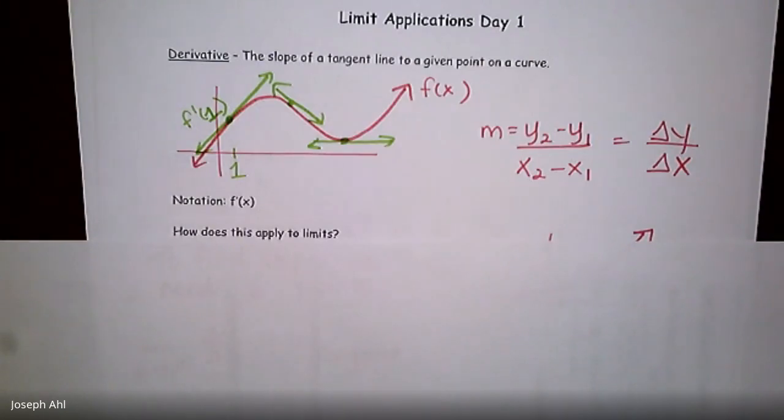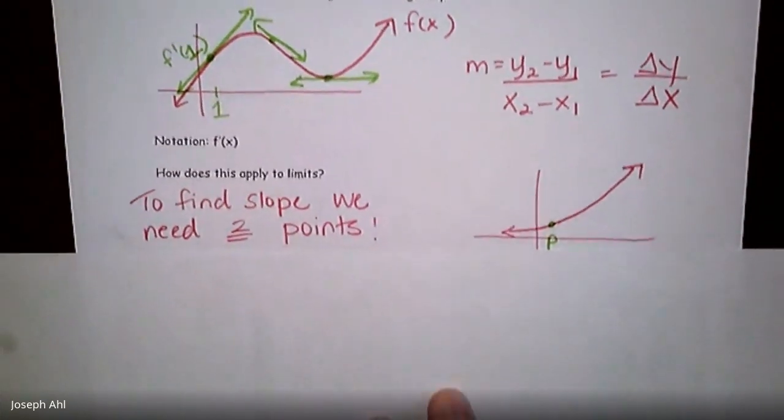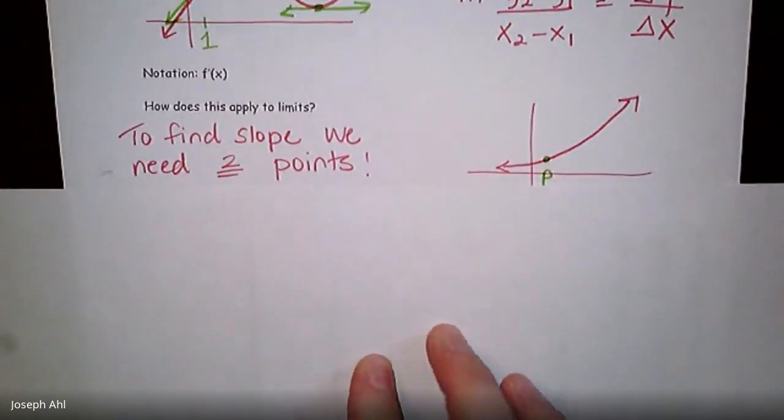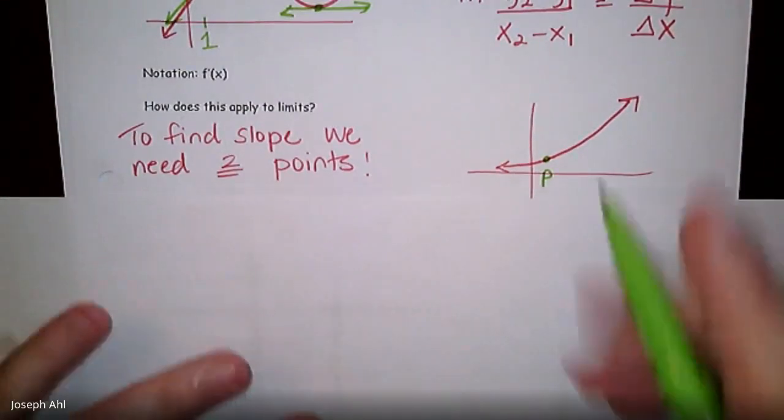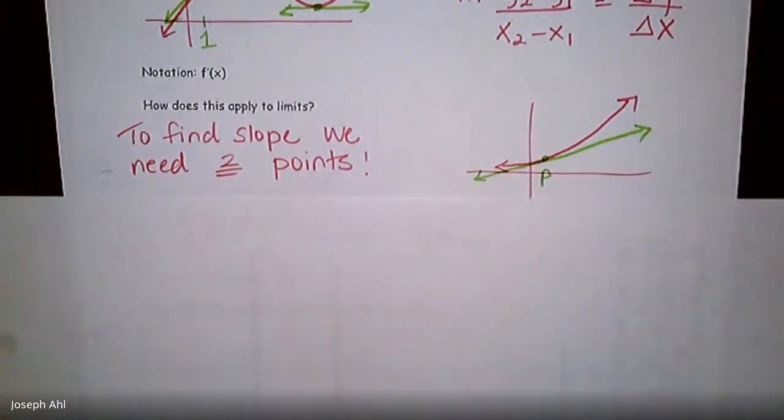So how does this apply to limits? Well, the problem that we're going to run into is to find slope, you really need two points. So when we're talking about a line that's tangent to a curve, if I want to find the slope and eventually the equation of the line that's tangent at this point P, the problem with that is that we can't apply the slope formula. We only have one coordinate point. So the way that we're going to get around that is we're going to find the slope of something called a secant line.